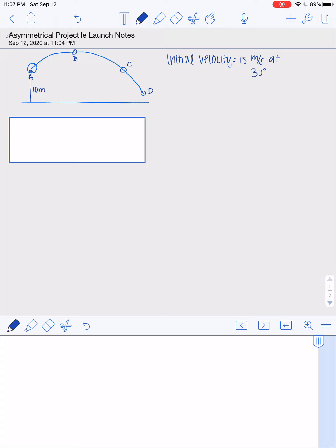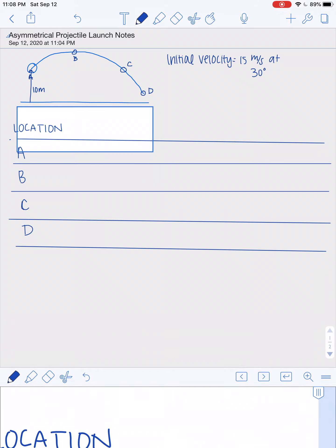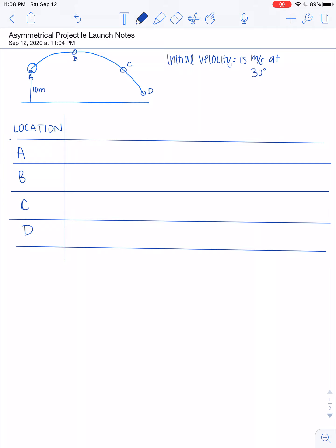So we are going to make a chart and try to fill in everything that we can using symmetry only. So we've got four different locations. And we are actually going to look for the same information that we saw for before. So we're going to look at acceleration in the x direction, acceleration in the y direction, the velocity at that location in the y direction, the velocity, the resultant velocity, and the speed.